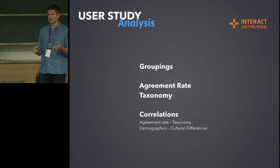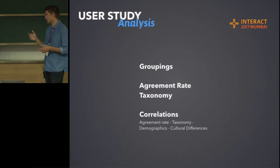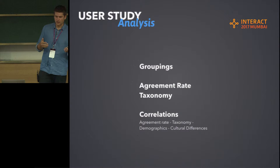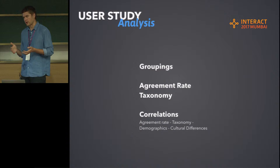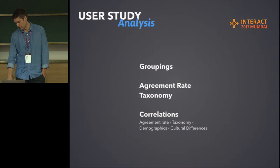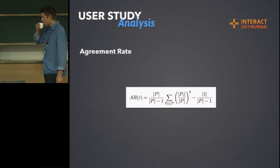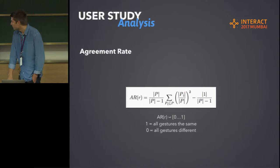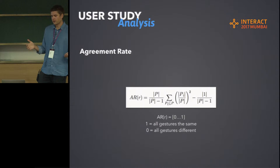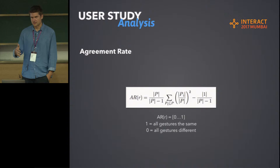We analyzed this by grouping the gestures that people did together, which allowed us to calculate the agreement rate and the taxonomy. We also looked at correlations between gestures, cultural factors, and demographics. The agreement rate equation gives us a number between zero and one — if it's one, everyone did the same gesture; if it's zero, no one did the same gesture. This lets us see which actions were easy to come up with and which were not.